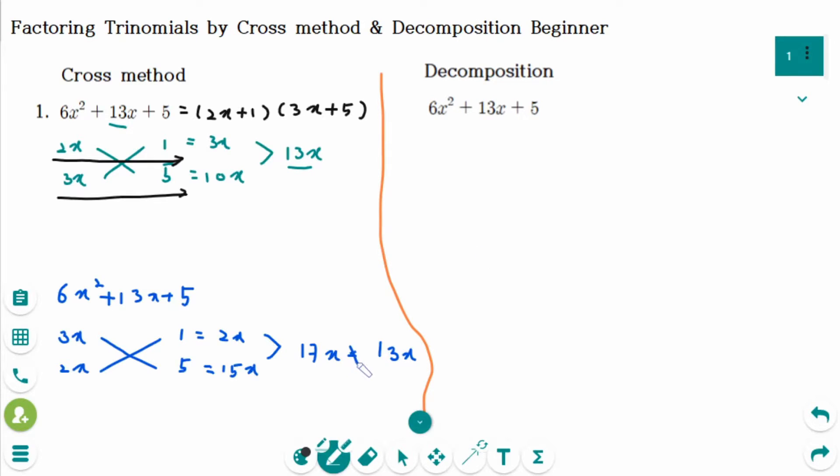The second method is decomposition. We are looking for two numbers that have a sum of 13 and the product of 30. The 30 arises from multiplying the first and the last term. So what are two numbers? They are 3 and 10.